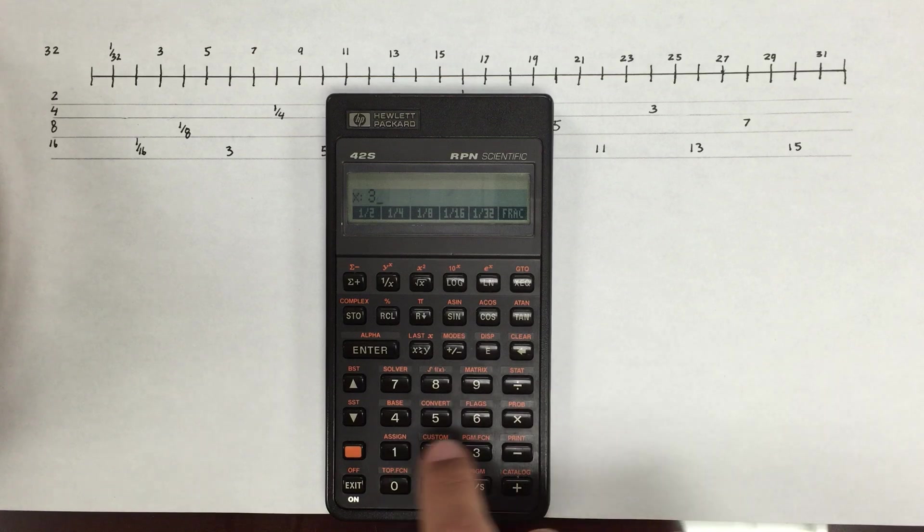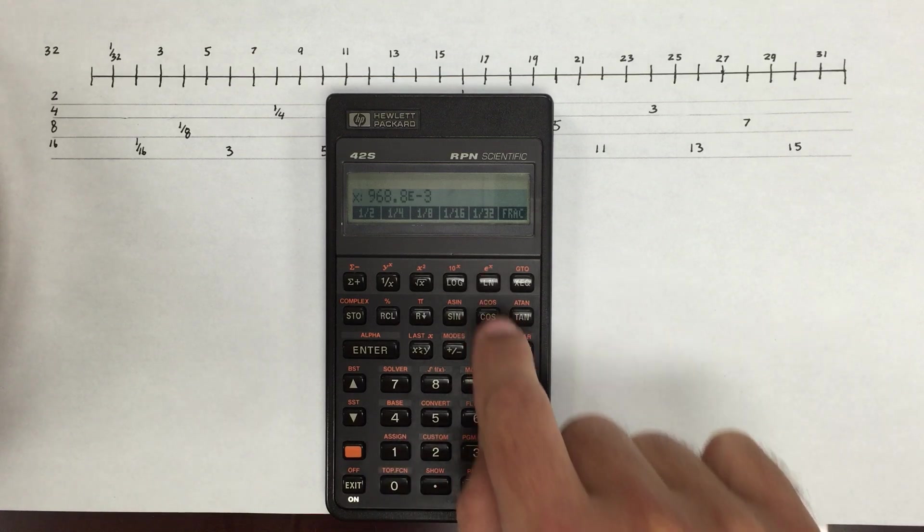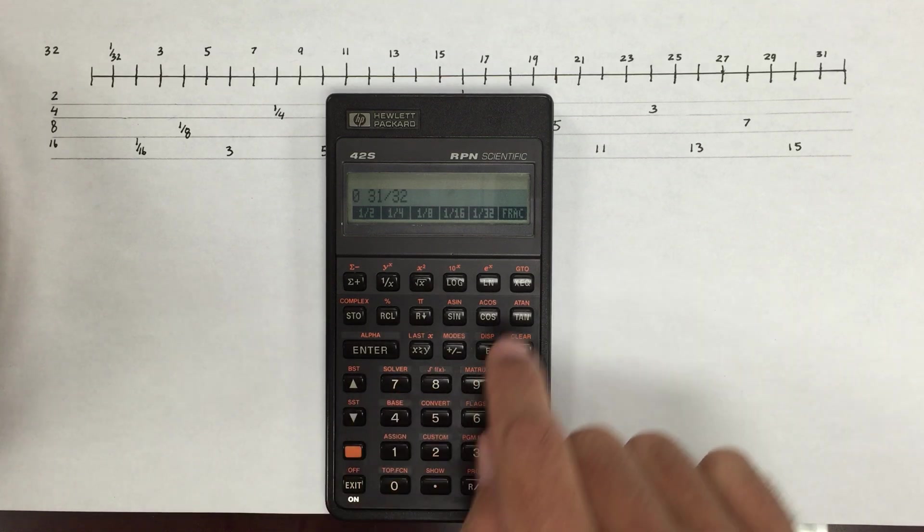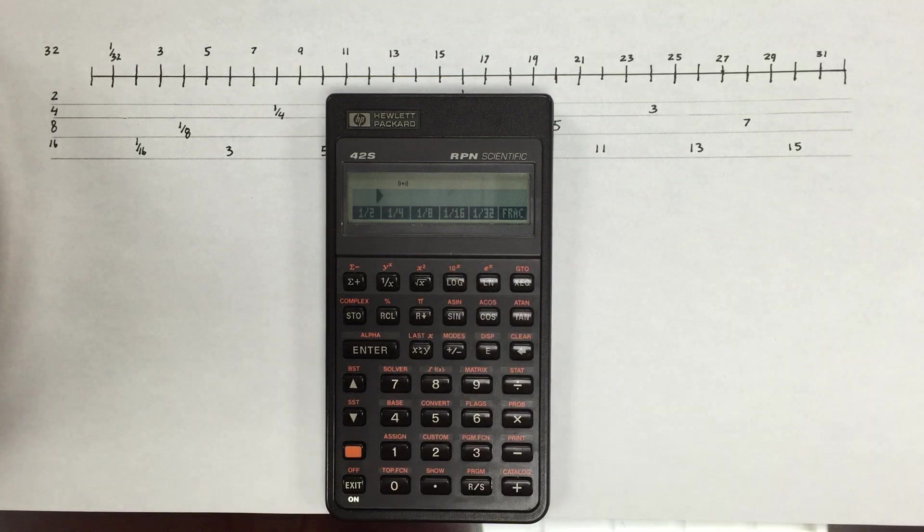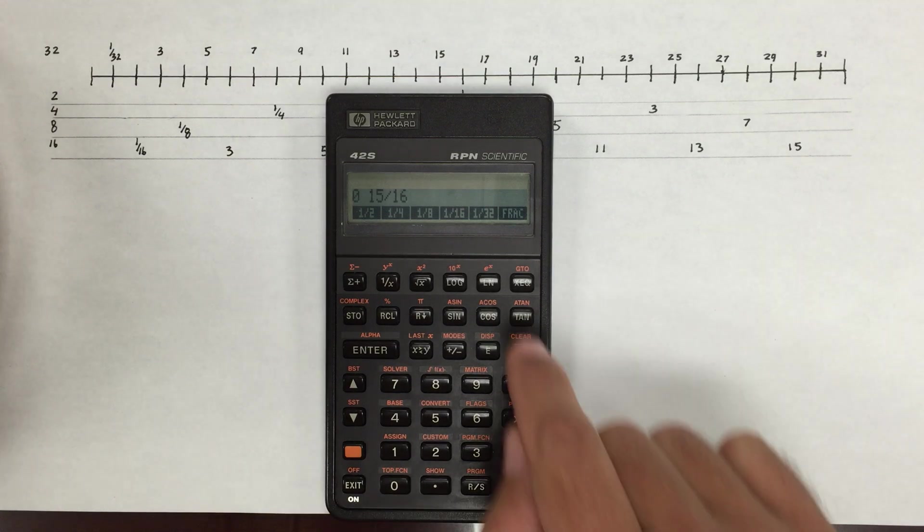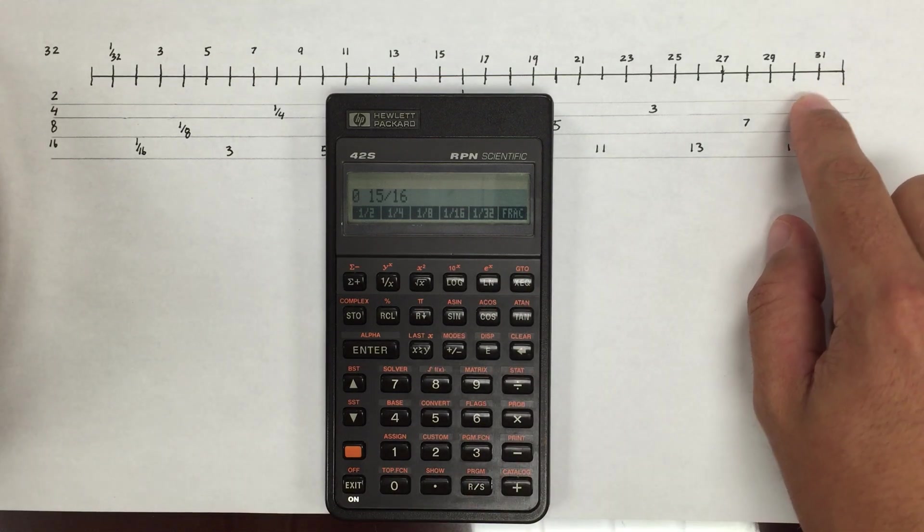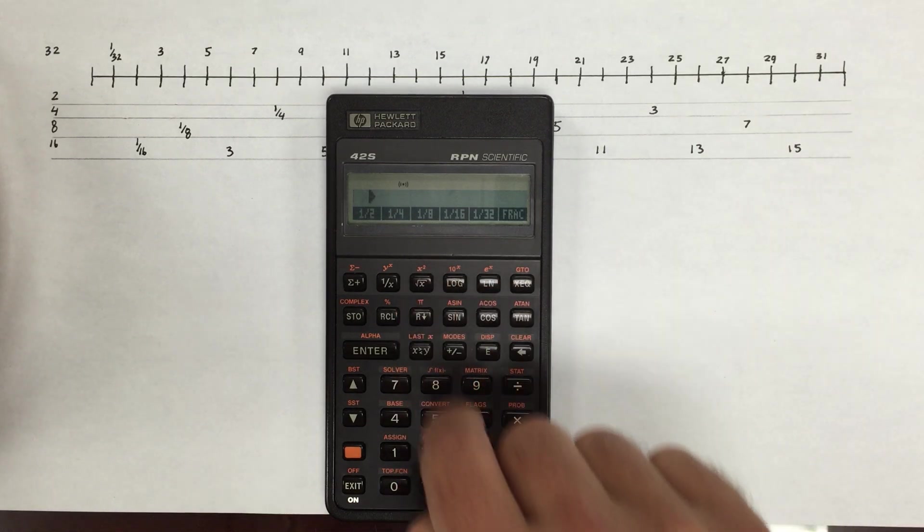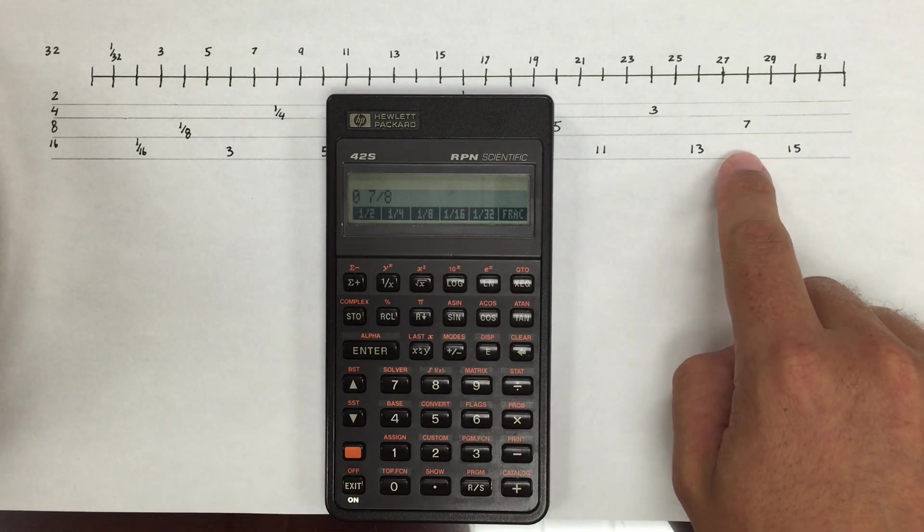But if I went to 31 32nds, I could specify the nearest 32nd. That would give me 31 32nds. I could specify the nearest sixteenth. 15 16ths. I went from 31 32nds to 15 16ths. Then I could do the nearest eighth. That's 7 eighths.